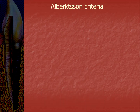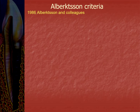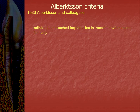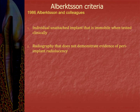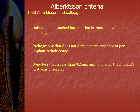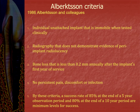What is the Albertson criteria for a successful implant? In 1986, Albertson and colleagues formulated criteria with five points. First, implants are clinically immobile — individual unattached implants should be immobile when tested clinically. Second, radiographs should not demonstrate evidence of peri-implant radiolucency. Third, vertical bone loss less than 0.2 mm annually following the implant's first year of service. Fourth, absence of persistent and irreversible signs and symptoms like pain, infections, neuropathies, paresthesia, etc. By these criteria, a success rate of 85% at the end of a 5-year observation period and 80% at the end of a 10-year observation period should be achieved.